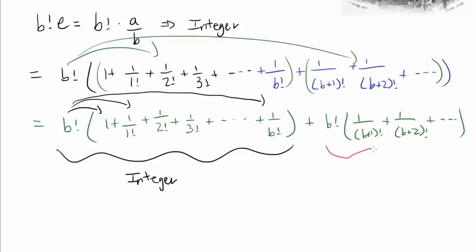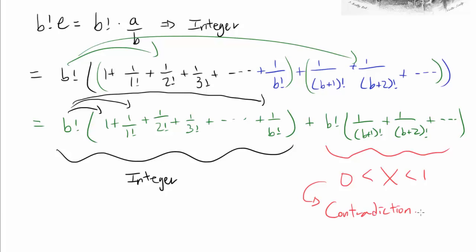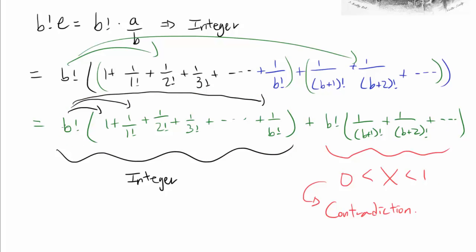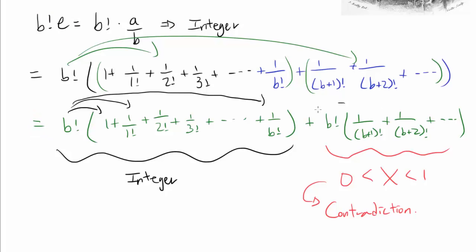We are going to show that the second part — let's call it X — is going to be between 0 and 1 exclusive, and this is going to bring about a contradiction. Because now we have an integer plus something between 0 and 1, which can never be an integer, yet it has to equal B factorial times E, which has to be an integer. So once we show that X is between 0 and 1, we are done.